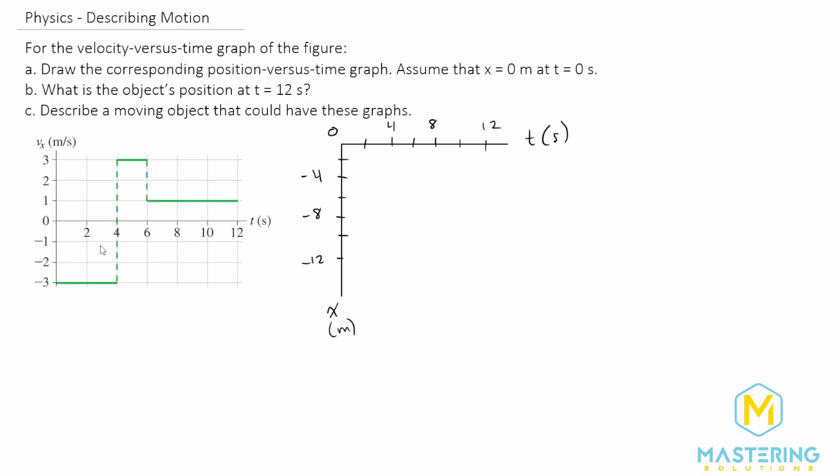So first off, we're going to be finding the area under the curve to find the position. So at two seconds, we have moving at a negative three meters per second. So two by three, that area is a negative six. So at two seconds right here, we'll be down to negative six.